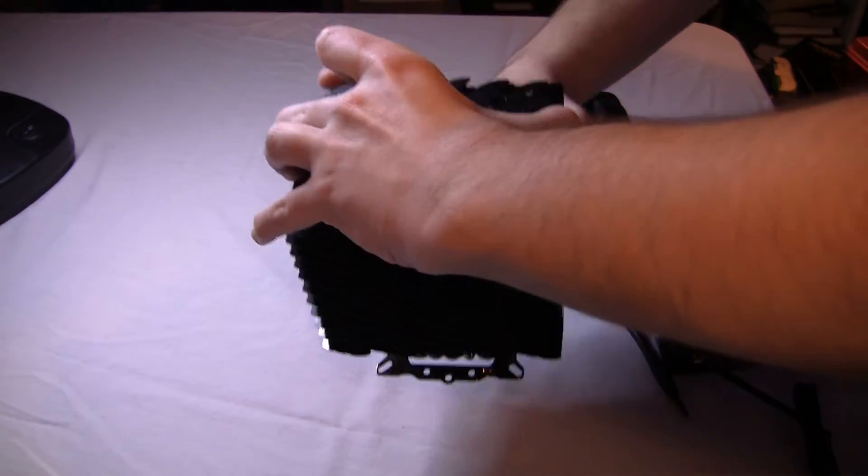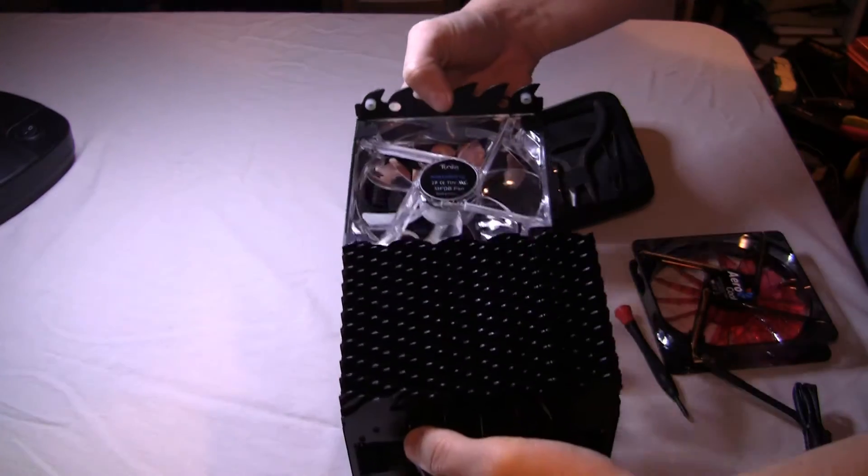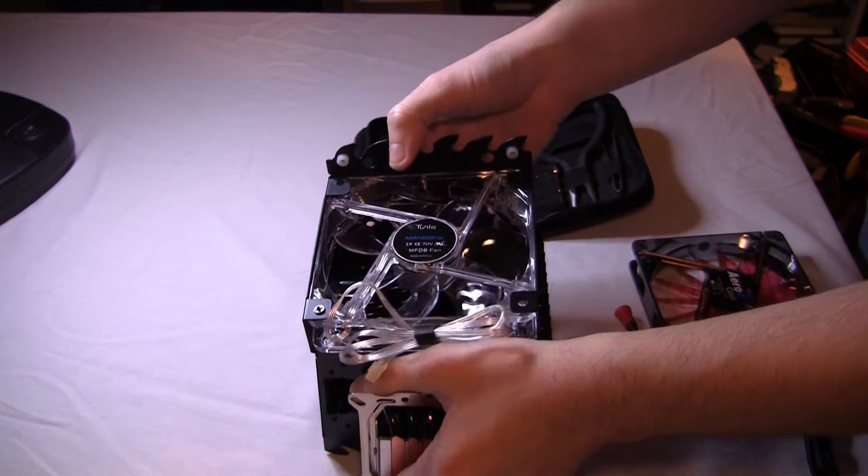Now we're first going to start removing the fan. You just unscrew the four corner screws, just like I did, and then you slide this out, and that's your mounting bracket with the fan itself.